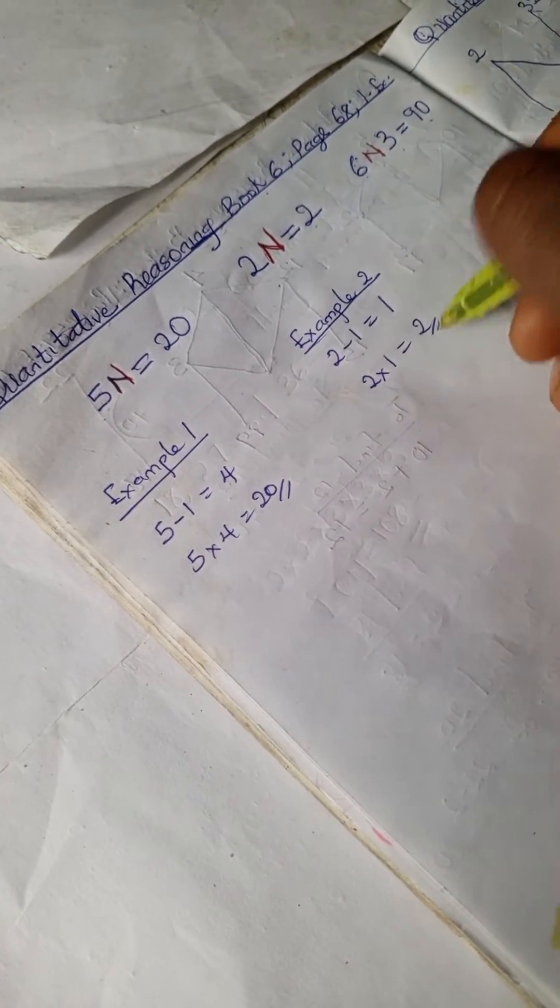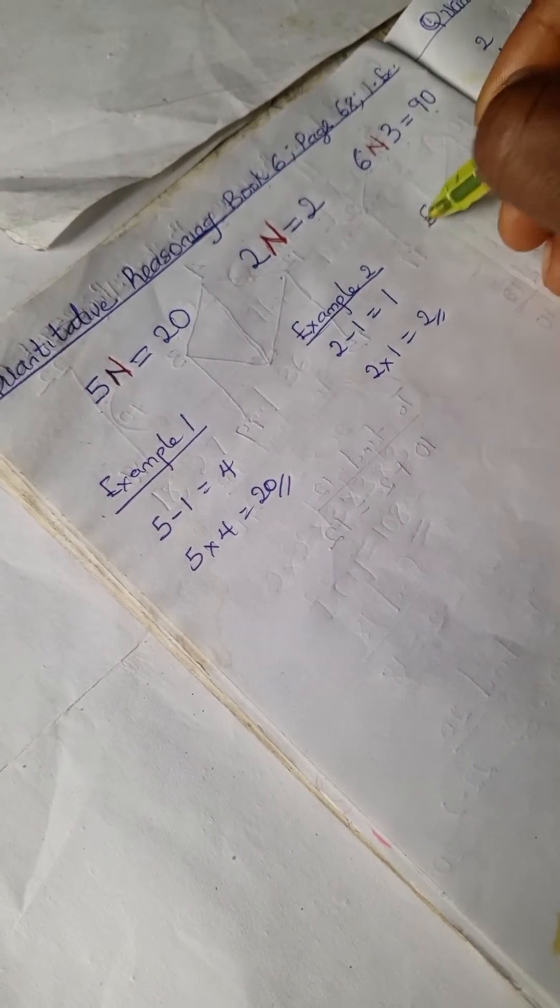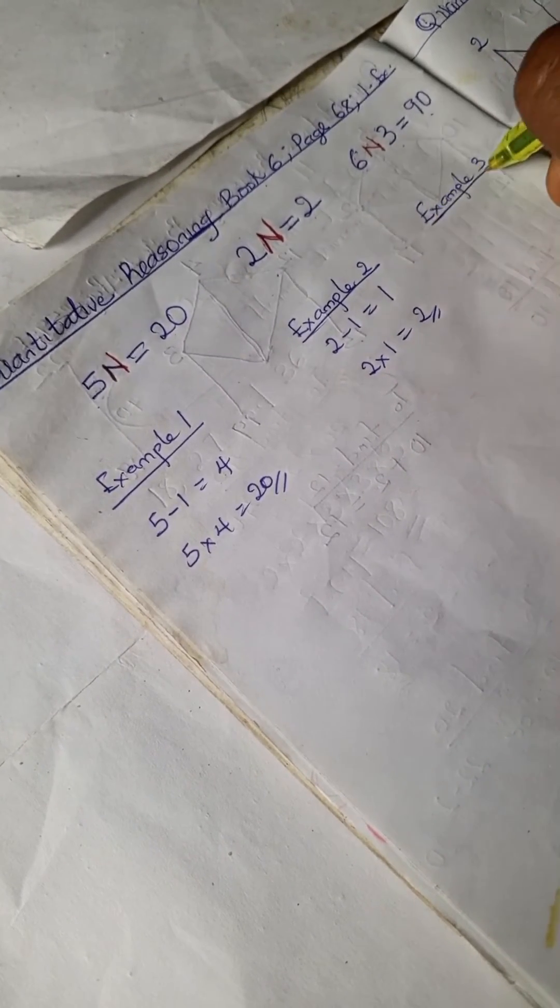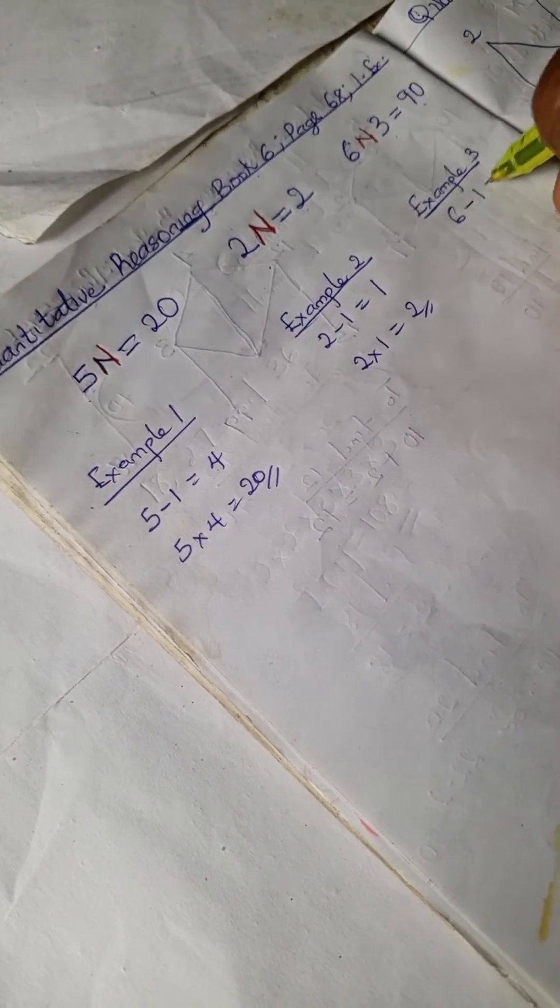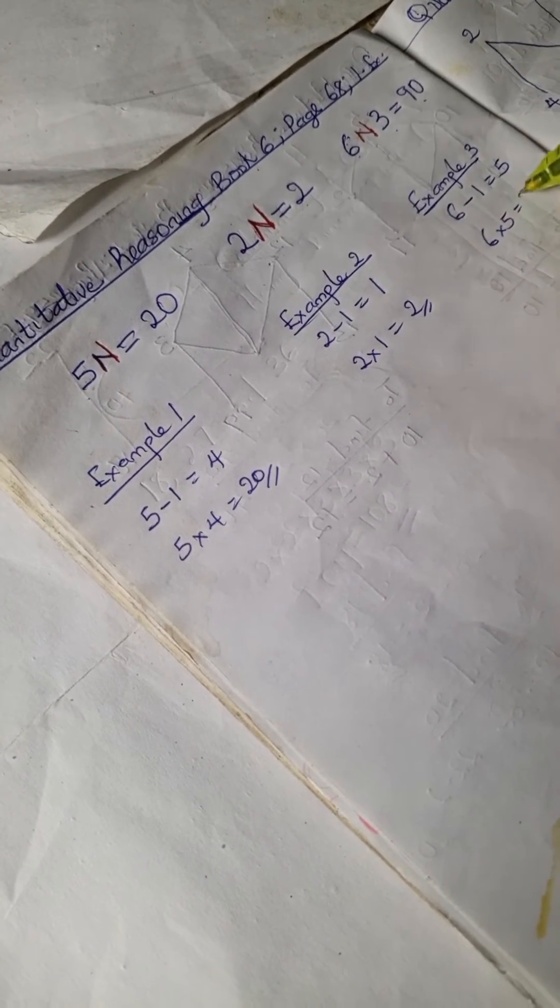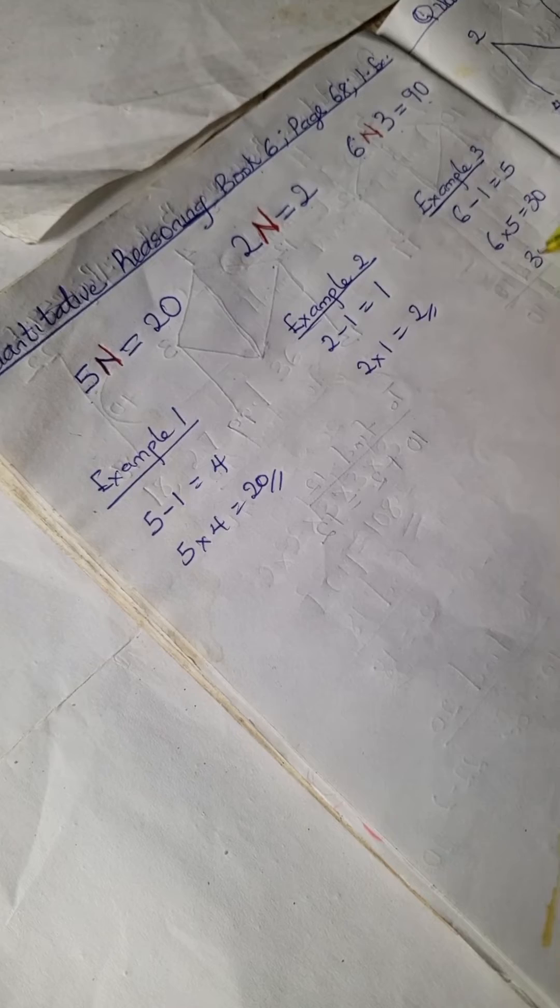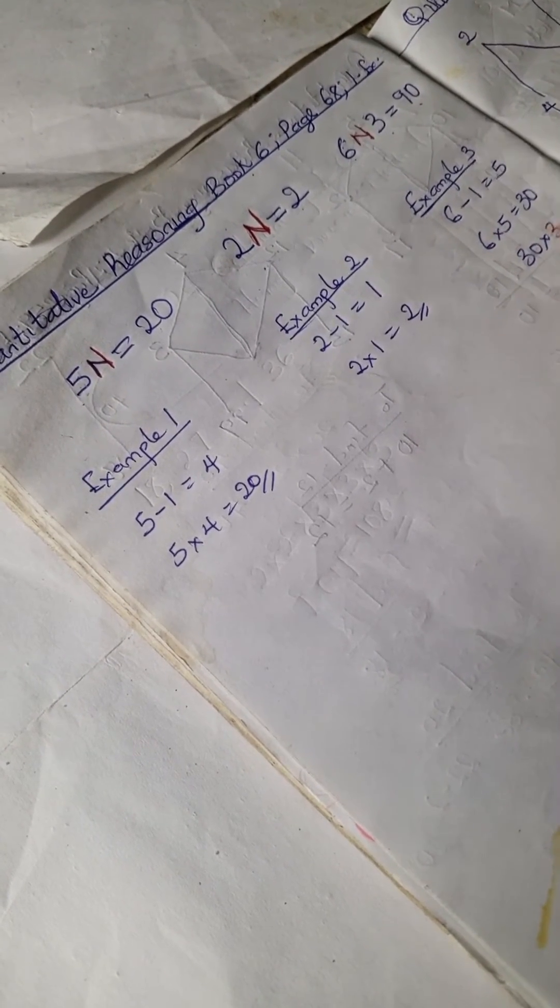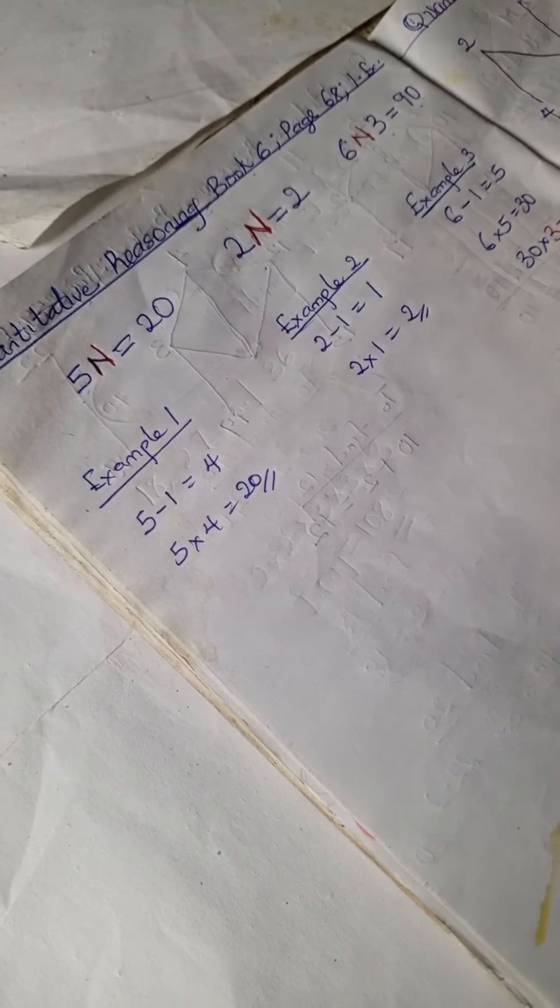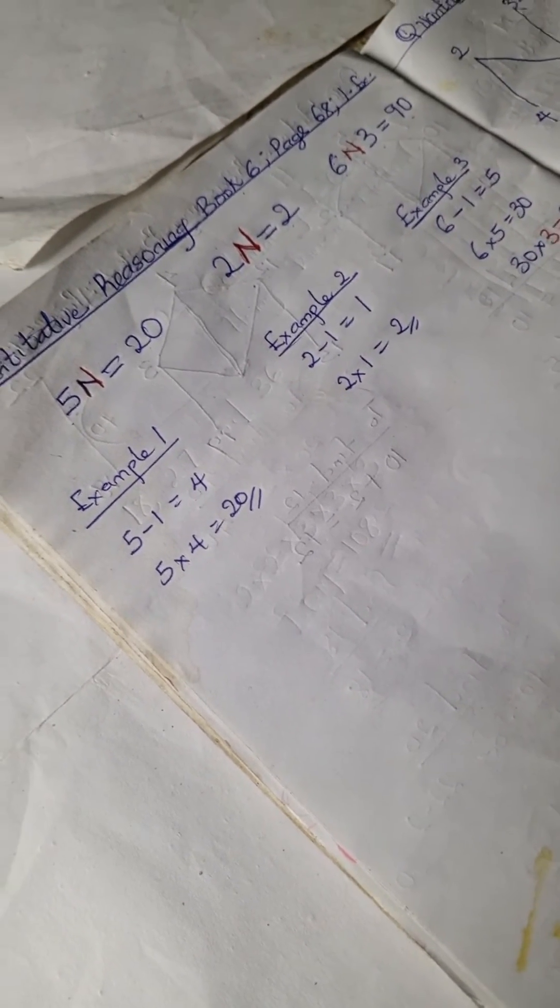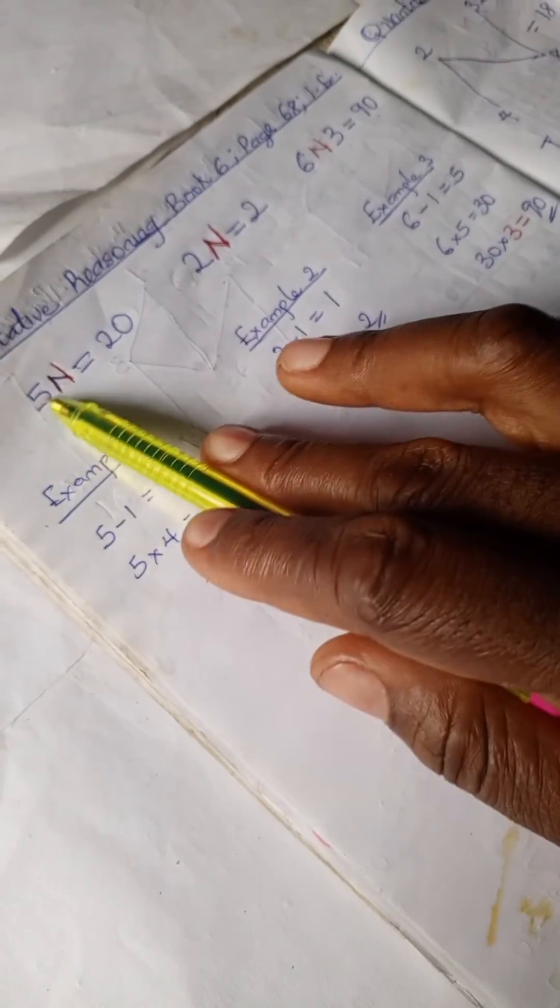For example 3, we have 6 minus 1 is 5, 6 times 5 is 30, 30 times 3 is 90.